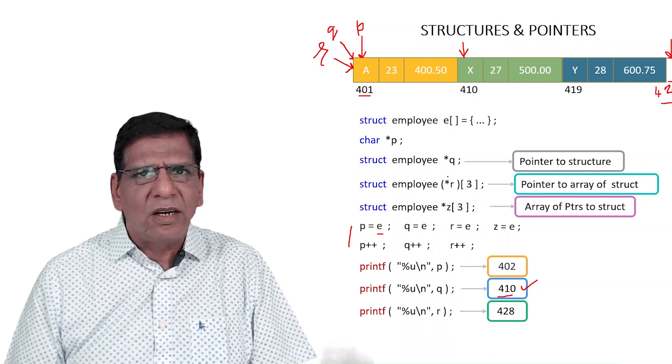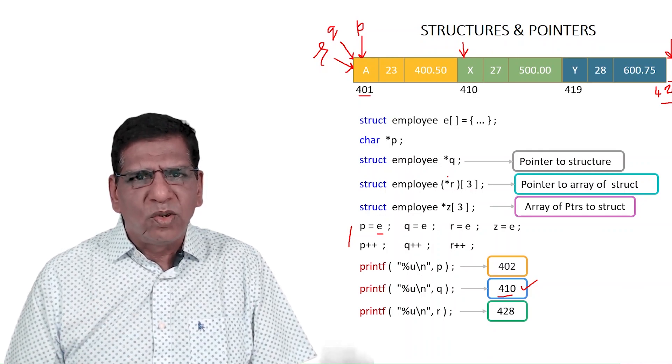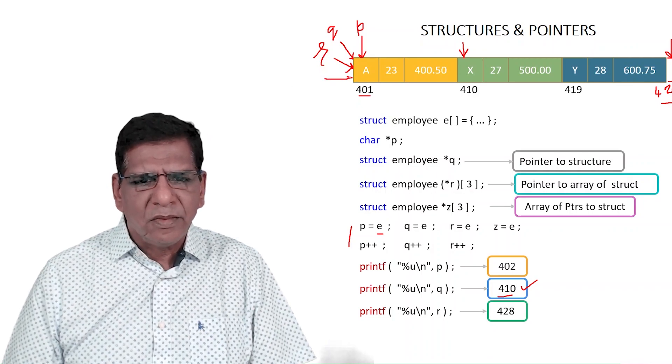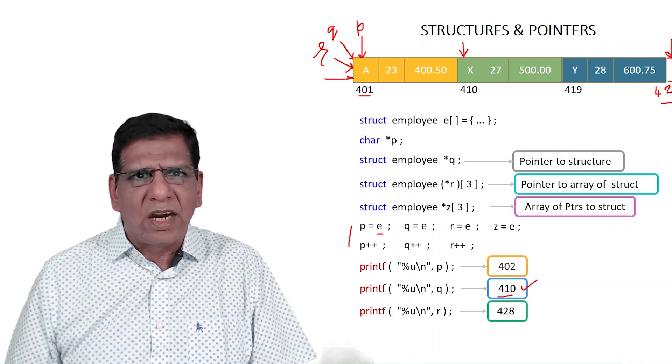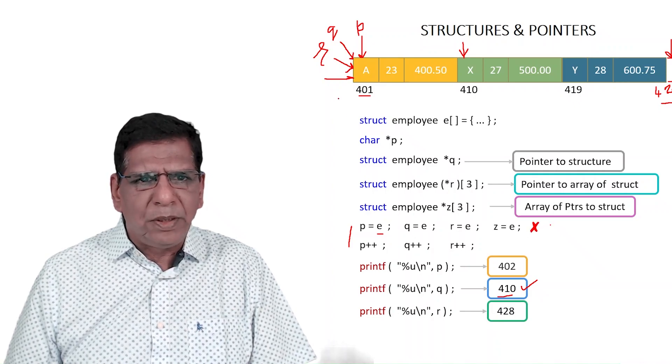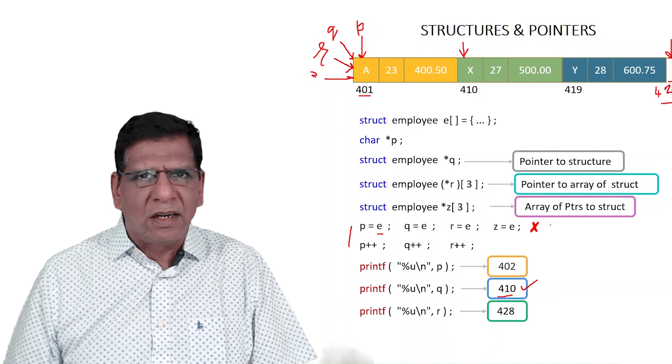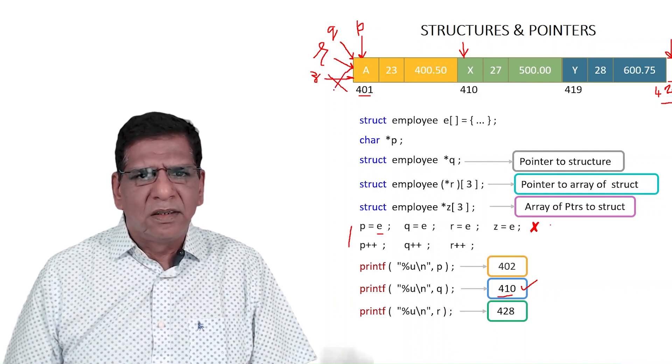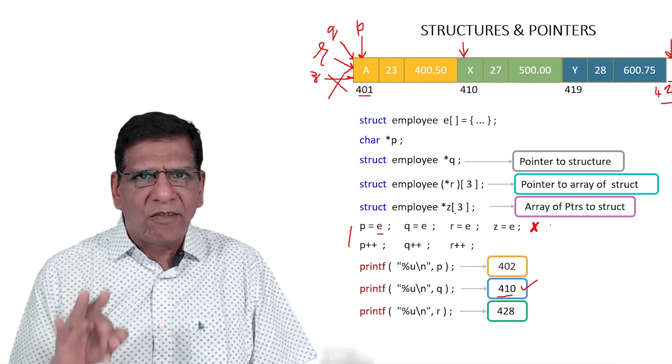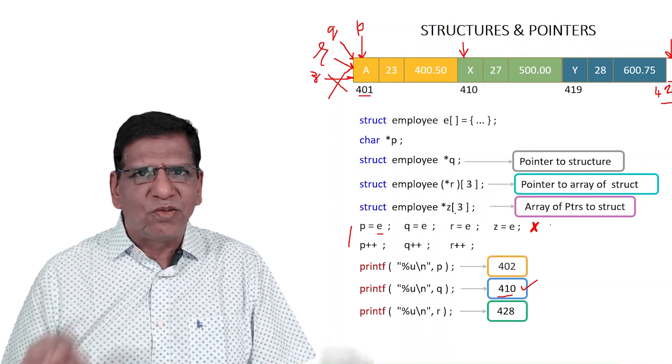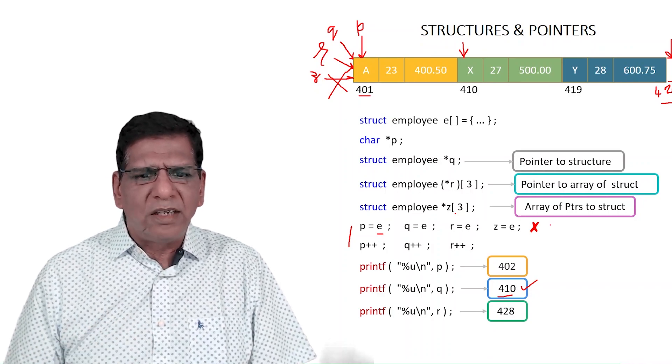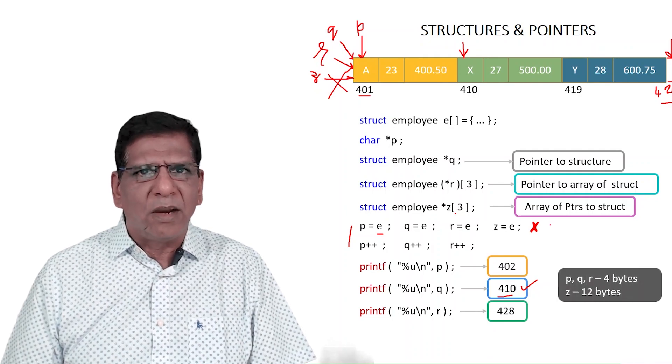Array of structures and pointer to an array is something which is different. Do you agree that all of them, P, Q, and R, would be four bytes each? Because ultimately all these three contain nothing but one address. Whereas Z is supposed to hold three addresses. One address is four bytes, so three addresses would be 12 bytes. That explains why P, Q, R is of four bytes, whereas Z is going to be of 12 bytes.